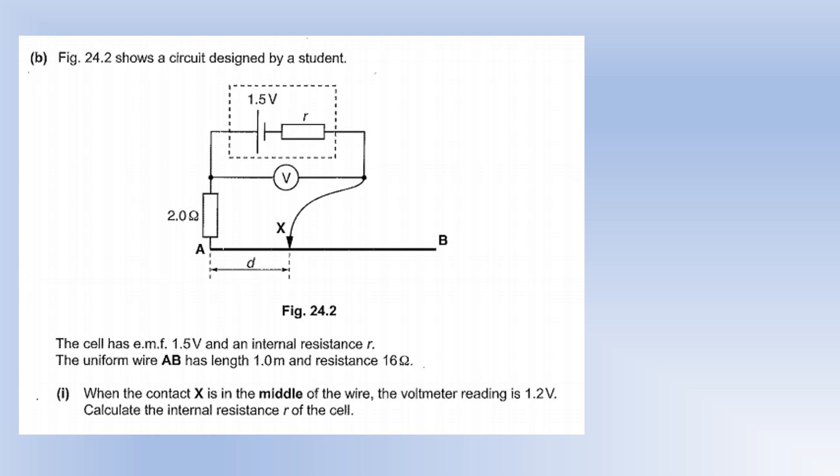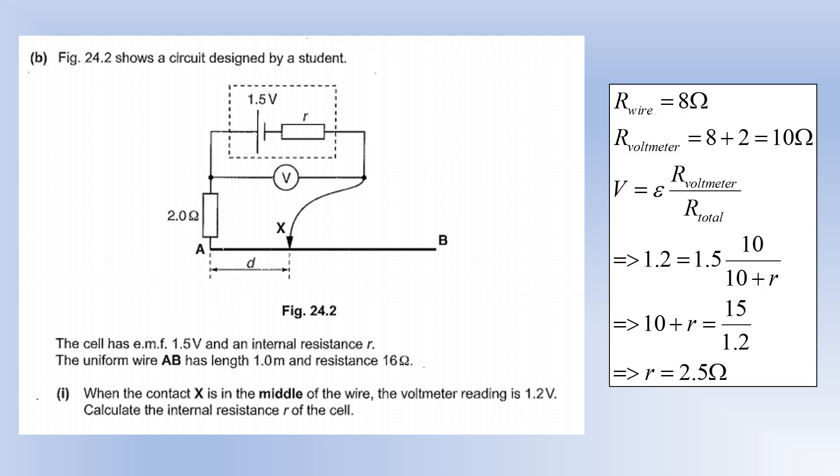Question 14: a cell of EMF 1.5 V with internal resistance r, connected to a uniform wire AB of length 1 m and resistance 16 ohms. With the contact at the midpoint, the wire resistance is 8 ohms, giving a total external resistance of 10 ohms and a voltmeter reading of 1.2 V. Using the potential divider equation and rearranging for r gives an internal resistance of 2.5 ohms.